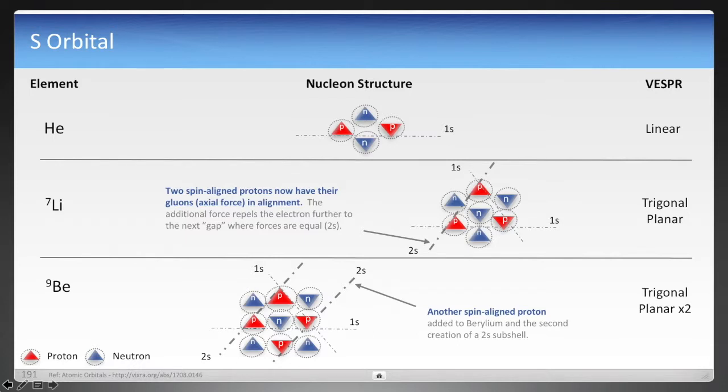So first off, let's talk about the s orbital. So with helium, we have protons with two different spins. And as you can see in the very top there, a line that passes through just two of those protons, but two protons with opposite spin. Again, the legend here has spin up as the triangle with the pointed edge facing up and spin down with the pointed edge facing down.